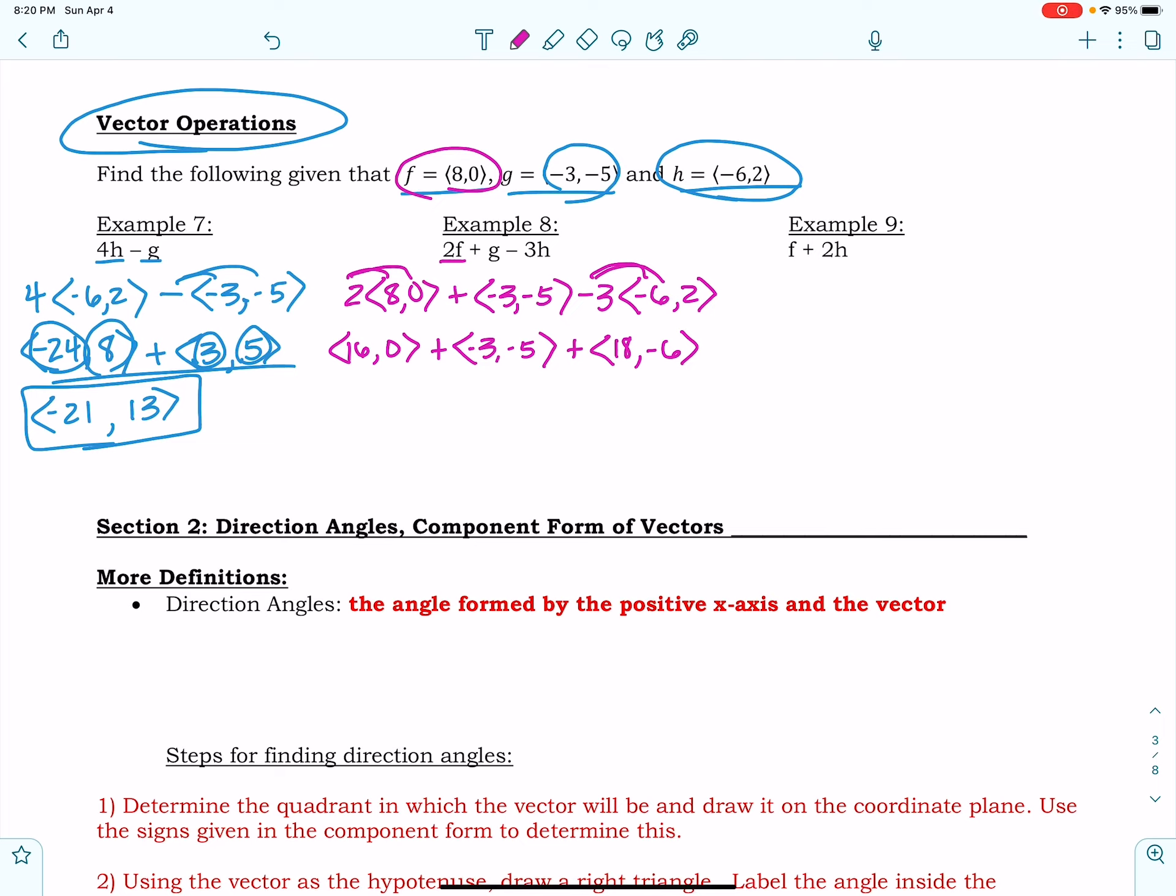Calm down everybody. Alright, so I've got 16 minus 3 plus 18. 16 minus 3 is 13, 13 plus 18 is 31. 0 minus 5 is negative 5, minus 6 is negative 11. Magic.